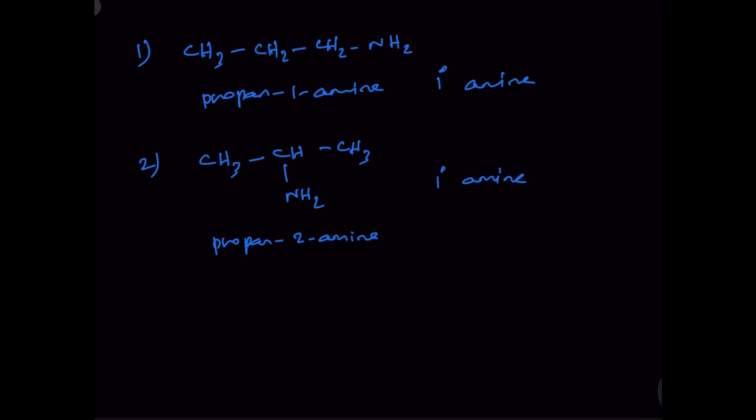In the case of amines, you just need to see how many carbon atoms the nitrogen is attached to. That's all you need to see. If instead of NH2, if OH was there, you would have called this a secondary alcohol, isn't it? But there you are seeing that the carbon atom bearing the OH group is connected to how many carbon atoms.